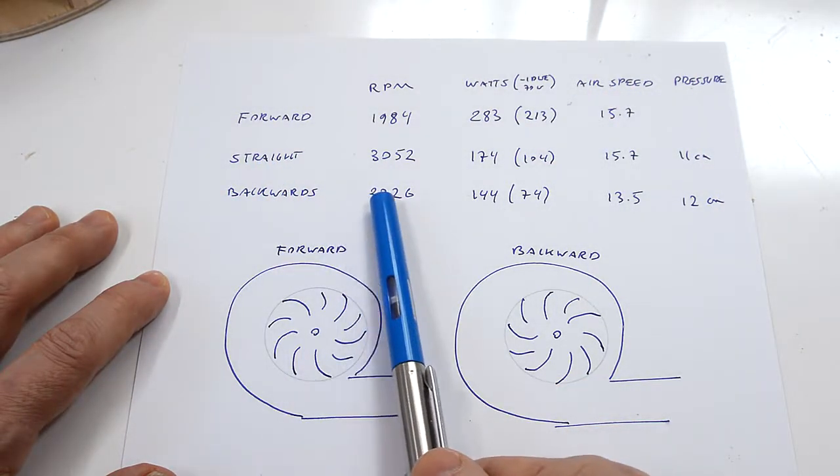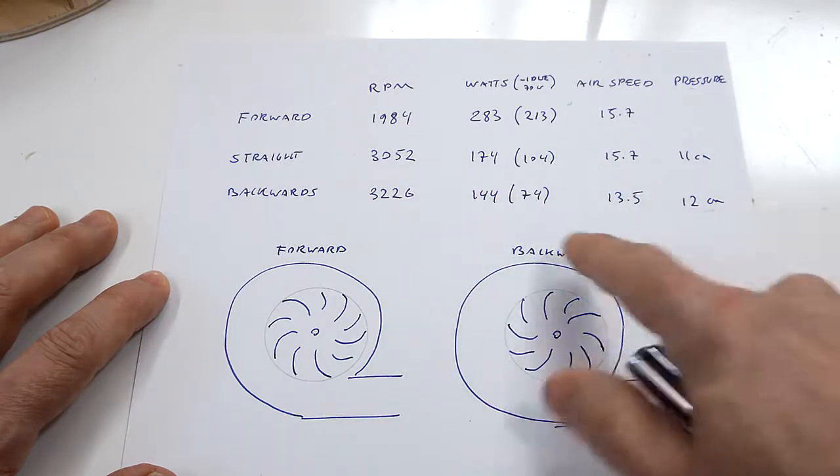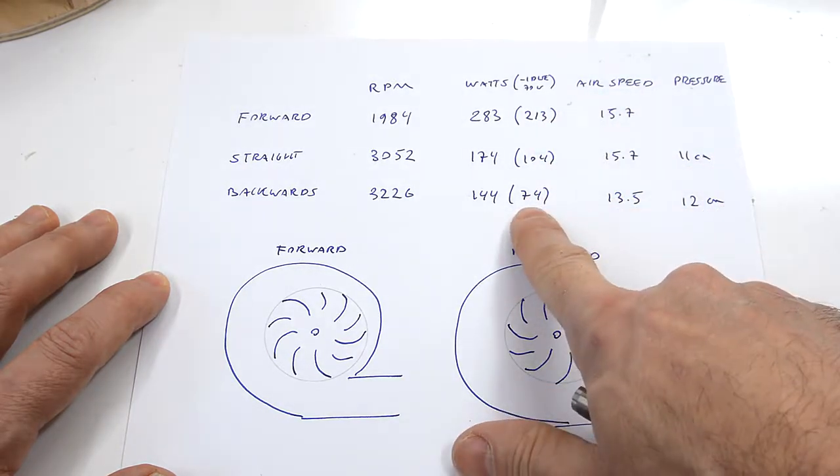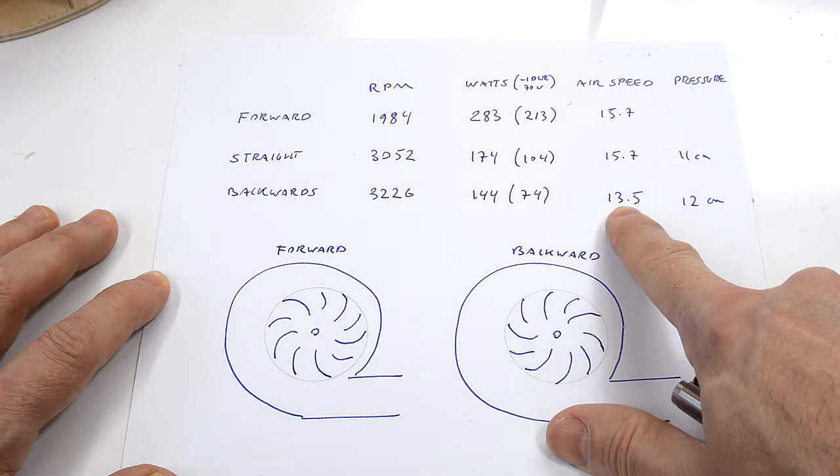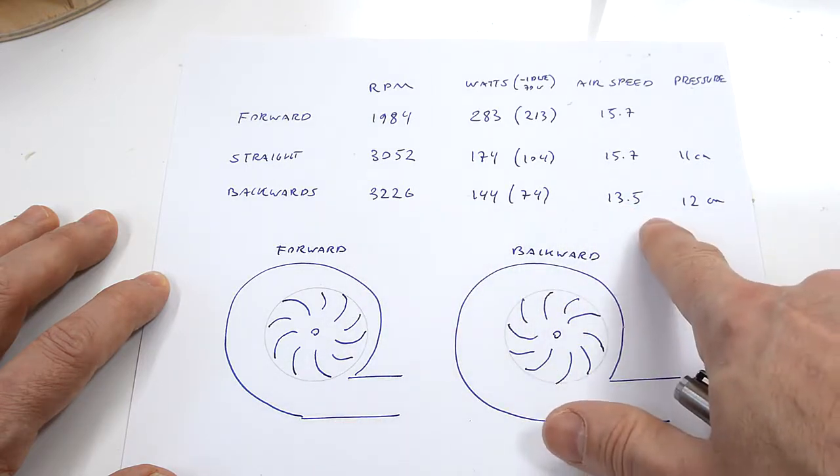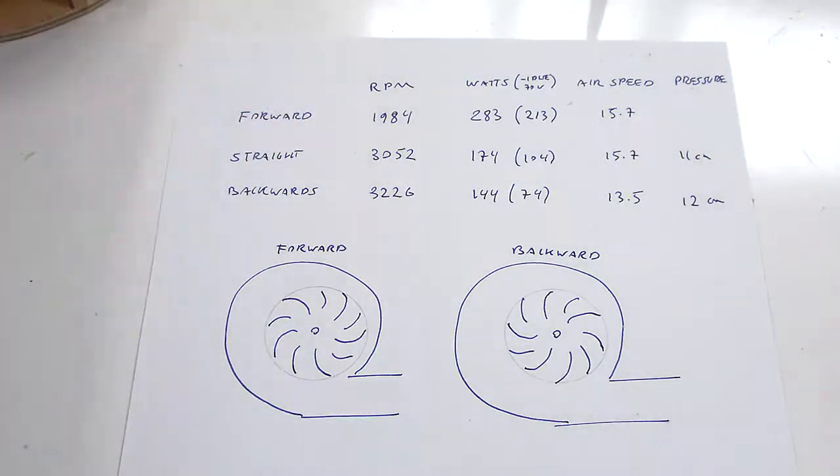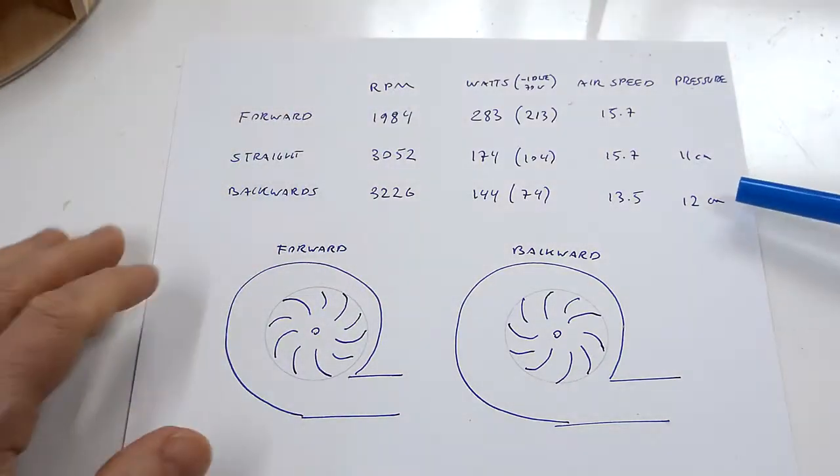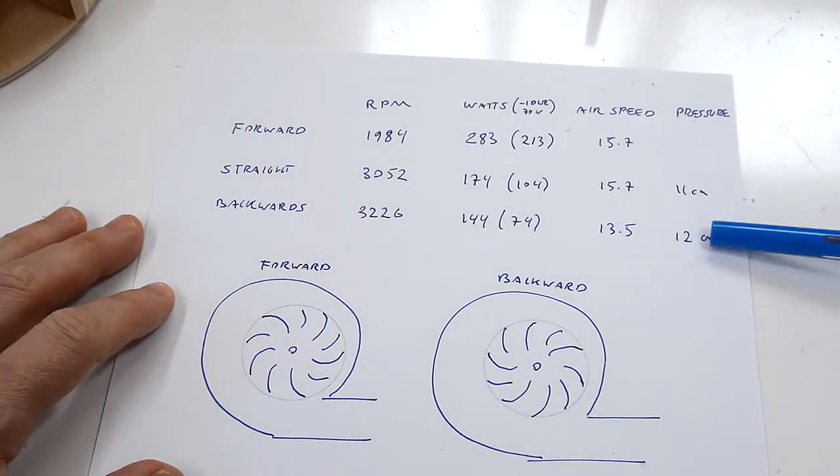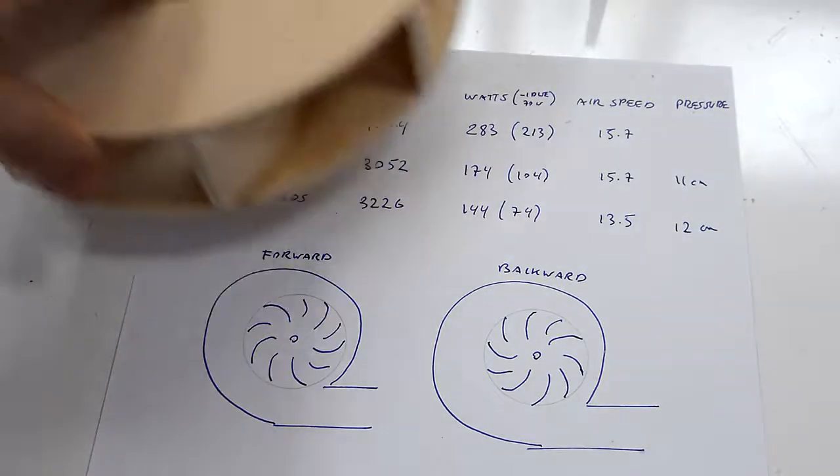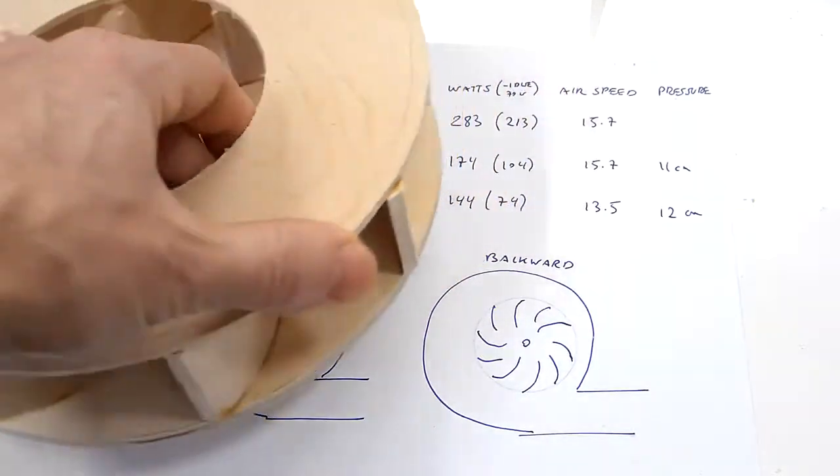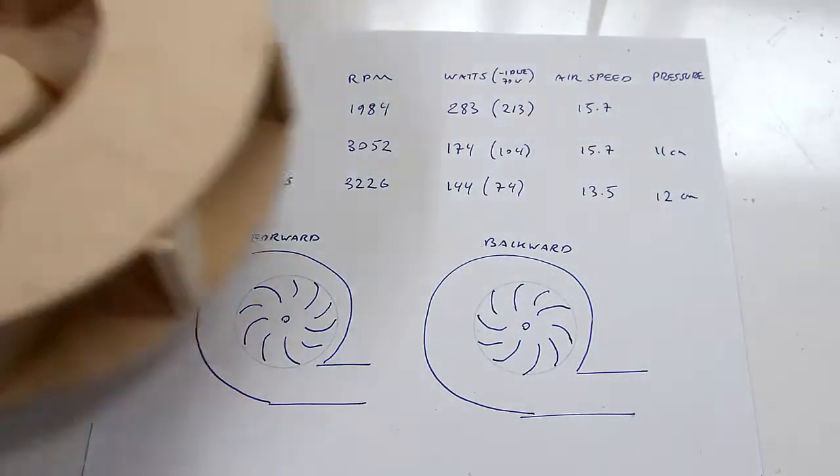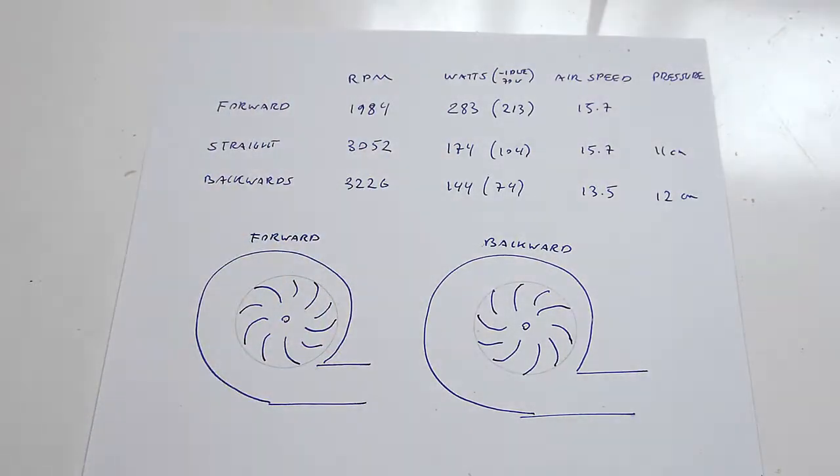With the backwards curved fins, the power consumption was a lot less—just 74 watts over idle versus 213 watts over idle, almost down to a third. The airspeed was less, even though it's running at a higher RPM. So you basically would need a bigger blower to get the same performance running it this way. But the static pressure it was able to put out was greater with the backwards curved fins. So it would make sense in terms of efficiency to run the rotor backwards curved and just make it bigger, because it's so much more efficient that you can run a larger rotor with the same size motor.